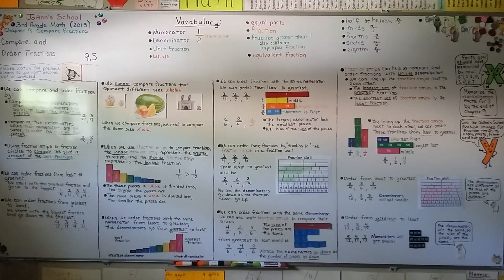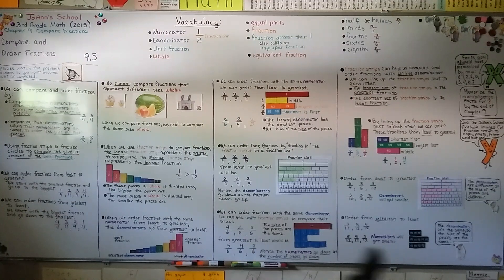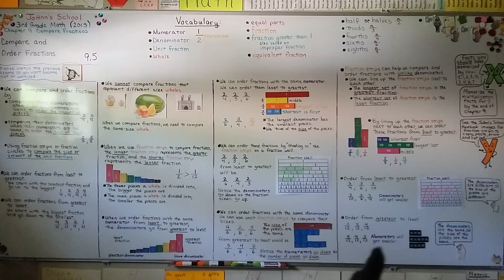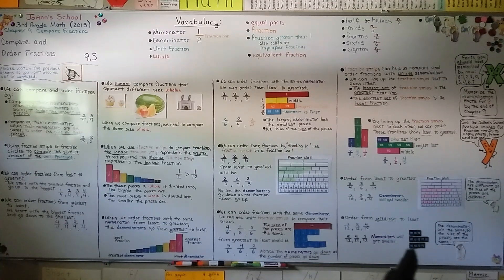Remember: when you compare and order fractions with the same denominator, the unit fractions are all going to be the same — we used all one-sixth pieces in one example, and all one-twelfth pieces in another. When the denominators are the same, that's what we use: the same unit fractions. We're going to talk about equivalent fractions next — I hope you have a wonderful day! Bye!